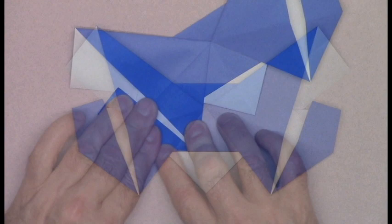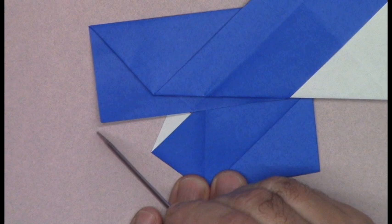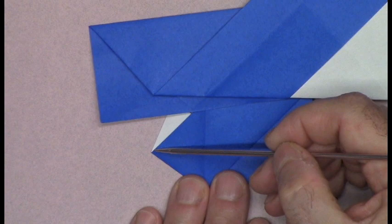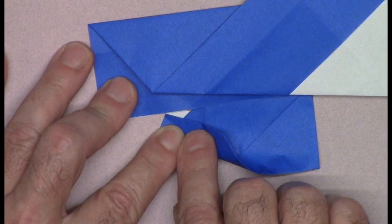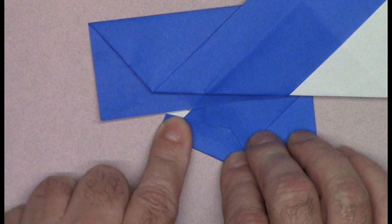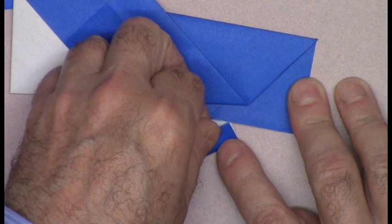Notice this raw white colored edge and the colored raw edge that crosses over. Take the corner to the point where those edges intersect and flatten. Make sure these raw edges are aligned. Let's do the same thing on the other side. Corner to intersection, aligning the edges.